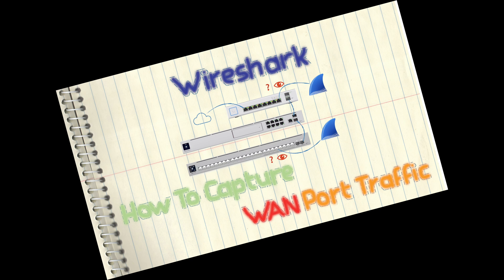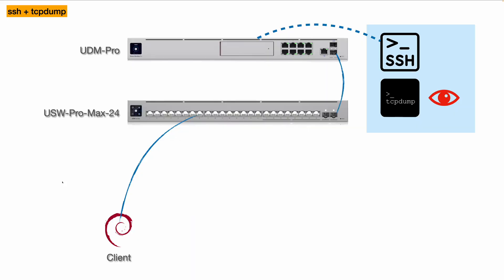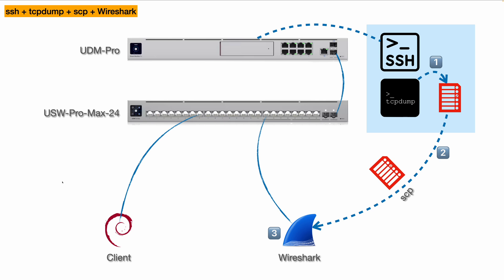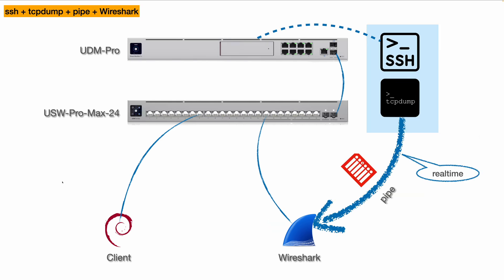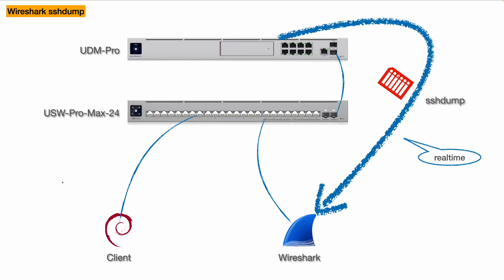I'm going to have a dedicated video just focusing on capturing the WAN port traffic, so in this video I'm only going to discuss in general how you can capture packets for your internal gateway traffic. I'll first discuss using TCP dump only without Wireshark. Then we'll talk about using TCP dump to capture packets and view offline in Wireshark. Then we'll discuss the new Ubiquiti gateway packet capture feature. Then real-time Wireshark monitoring, and finally the SSH dump feature of Wireshark.